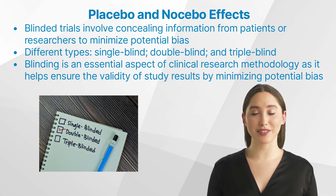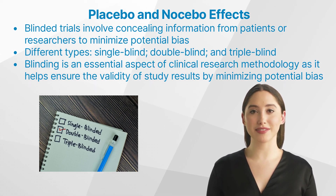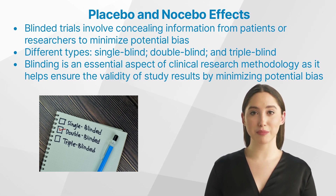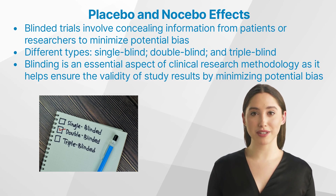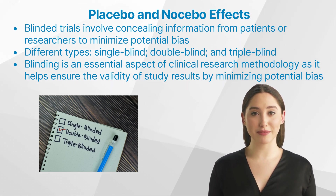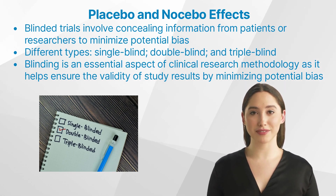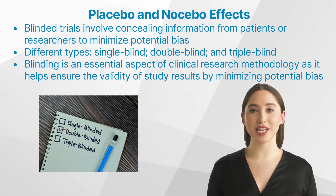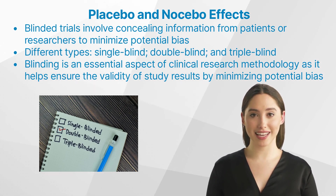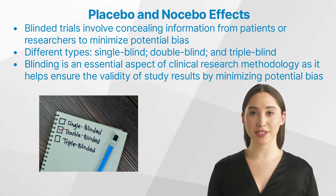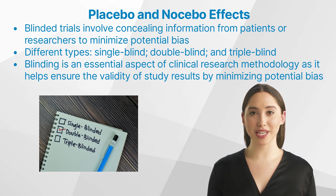Blinded trials involve concealing information from patients or researchers to minimize potential bias. There are different types of blinded trials, including single-blind, double-blind, and triple-blind studies. In single-blind studies, patients do not know whether they are receiving the active drug or a placebo, but researchers do. In double-blind studies, both patients and researchers are unaware of who is receiving the active treatment or placebo. Triple-blind studies involve concealing information from patients, researchers, and those who analyze the data. Blinding is an essential aspect of clinical research methodology as it helps ensure the validity of study results and that findings are reliable and accurate.